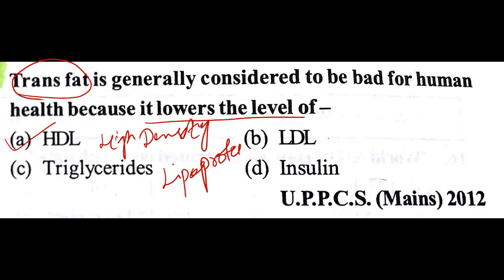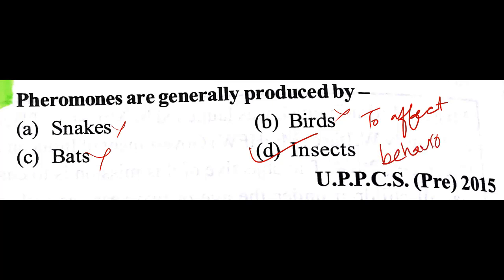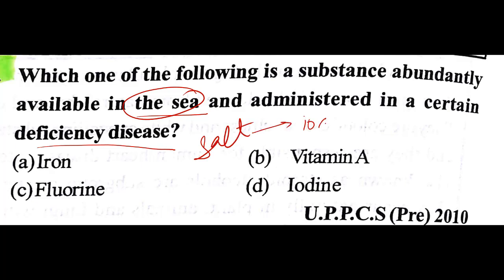Pheromones are generally produced by — the answer is D: insects. These are chemicals produced by insects to affect the behavior of others in their species. Which substance is abundantly available in the sea and administered in deficiency disease? The sea is full of salt and salt has iodine, so our answer is D: iodine.